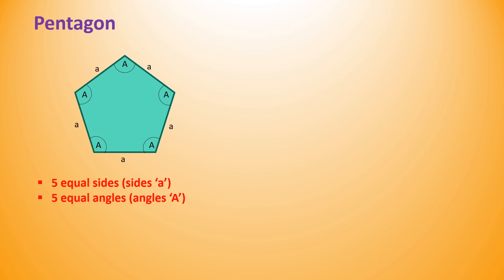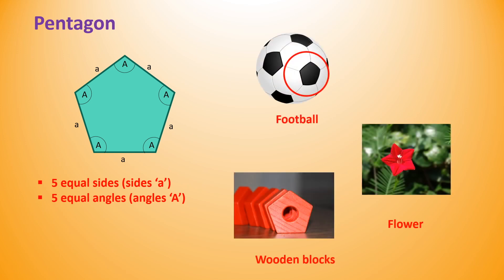Shapes with more than four sides are also there. Pentagon has five equal sides and five equal angles. We can see this shape in football, wooden blocks or in some kind of flowers.